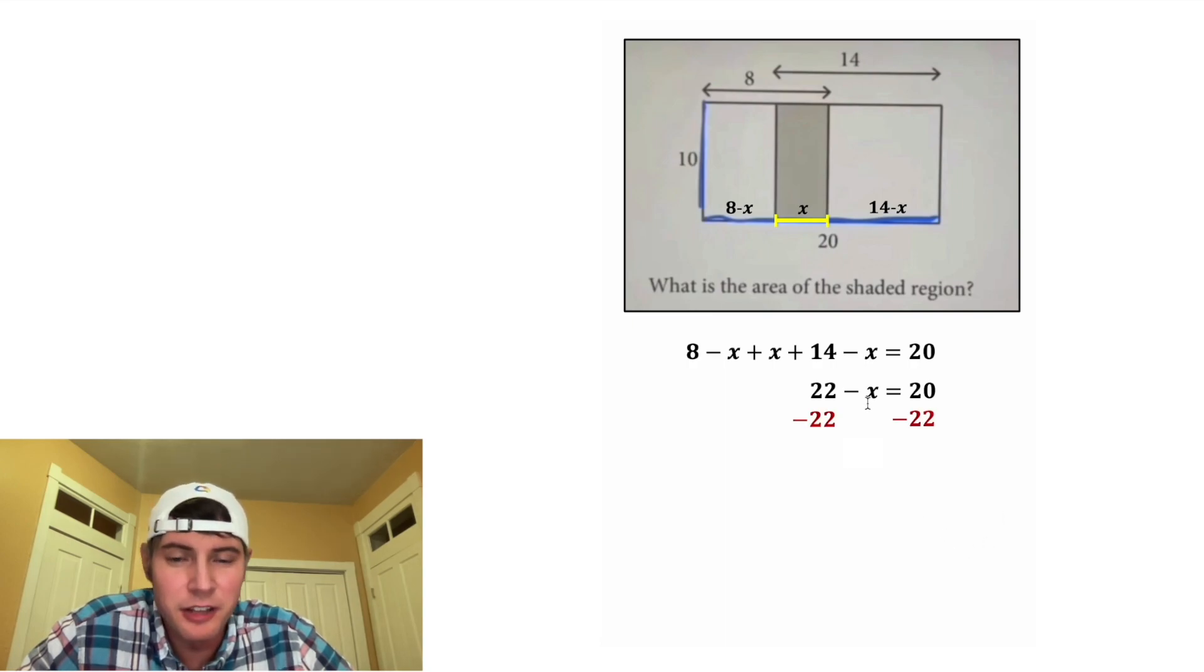We can subtract 22 from both sides. On the left-hand side, we have negative X. And on the right-hand side, 20 minus 22 is negative 2. So we have negative X is equal to negative 2. That means that X is equal to positive 2.